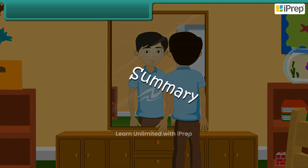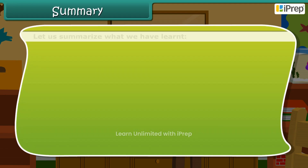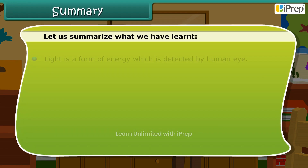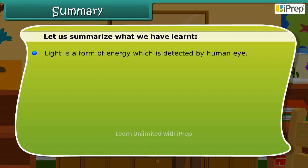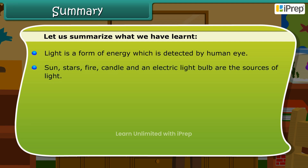Let us summarize what we have learned. Light is a form of energy which is detected by the human eye. Sun, stars, fire, candle, and an electric light bulb are the sources of light.